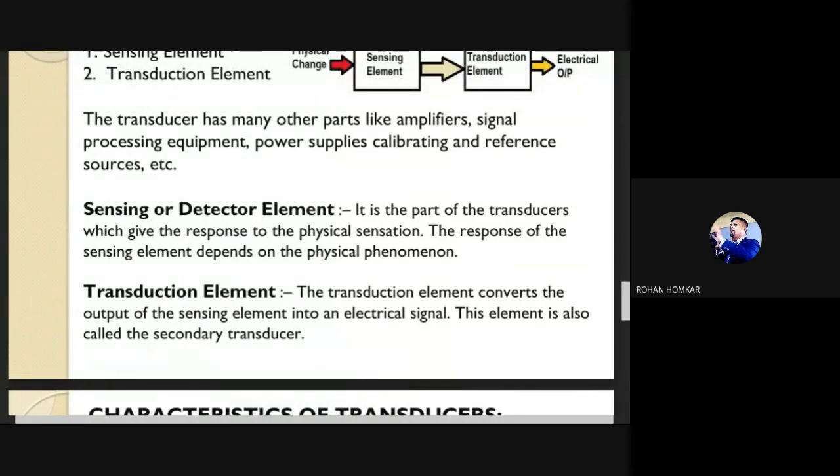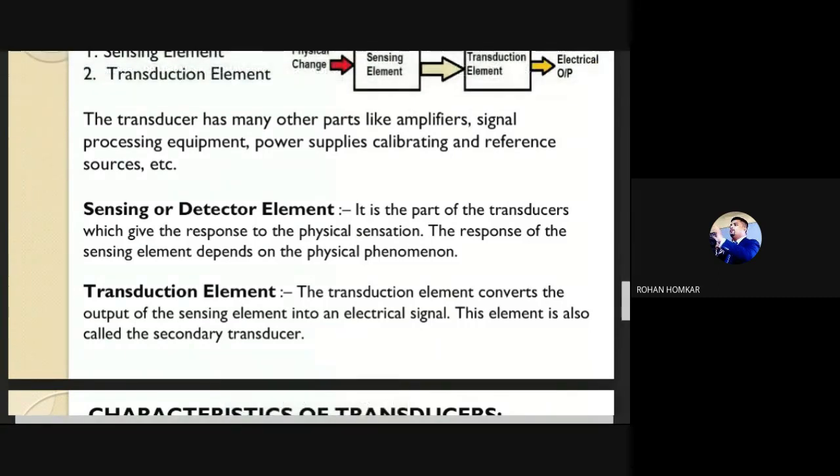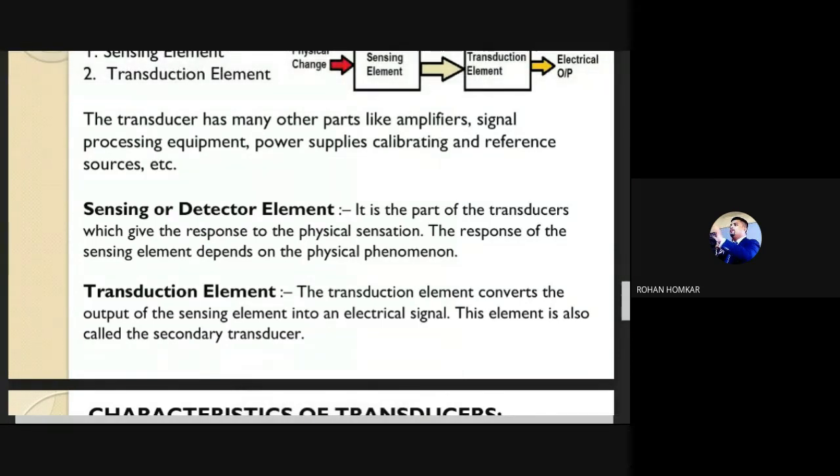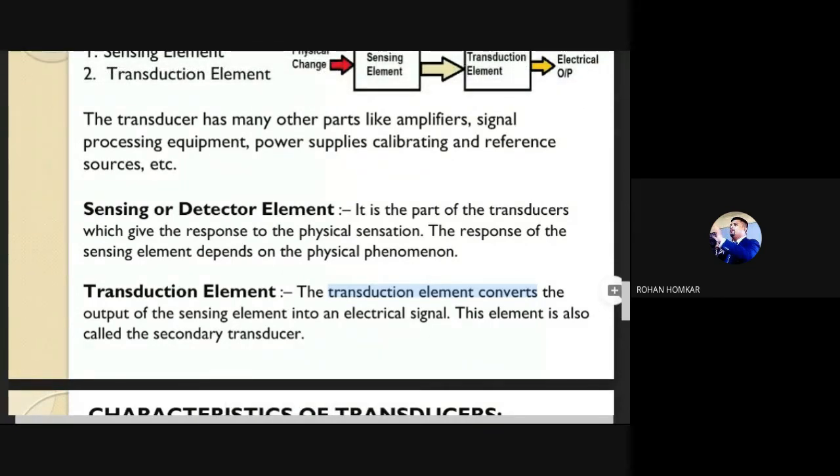After the sensing and detection element, the transducer responds to the physical sense and detects it, converting the physical phenomena. But we need to send it to our processor, so we require the transduction element which converts the output of the sensing element into electrical signal. This processing can be called the secondary transducer process.